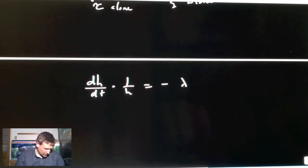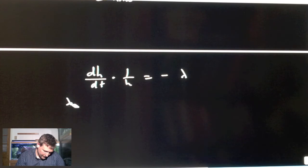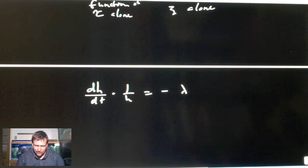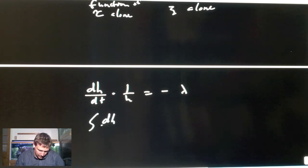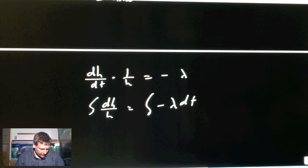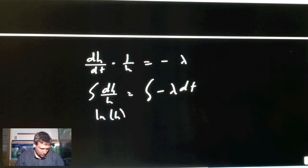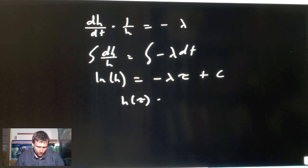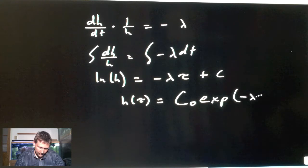What is the solution of this equation? To solve this you just have to integrate it. You have the integral dH over H on this side equals integral minus λ dτ. You can integrate that term and end up with log H equals minus λτ plus some constant. Then you take the exponential of both sides. You get H of τ equals some C₀ times exp to the minus λ times τ.